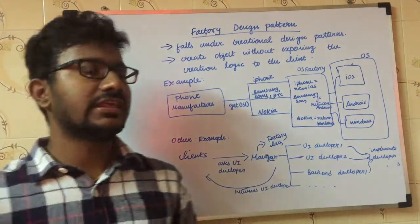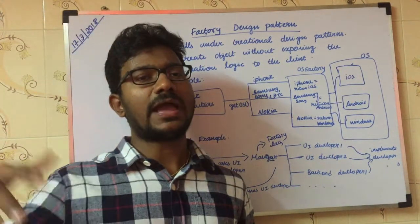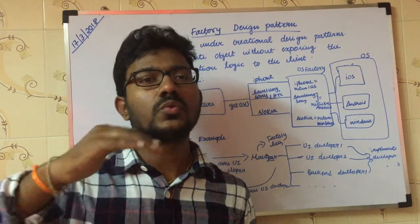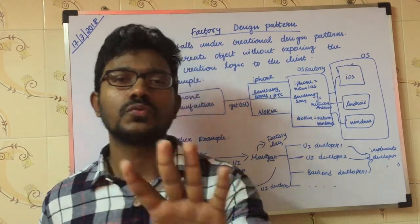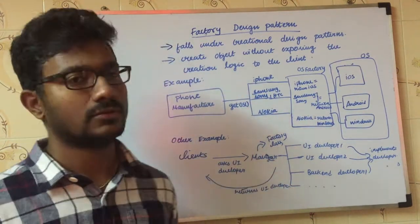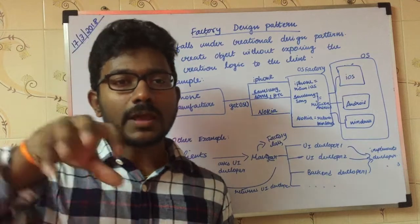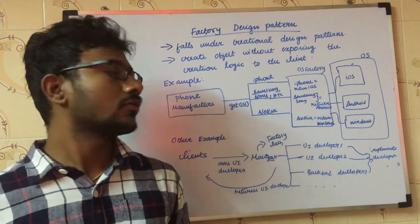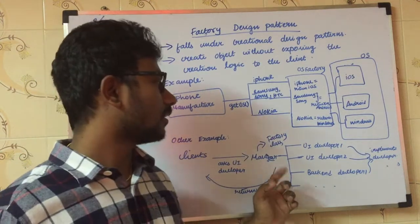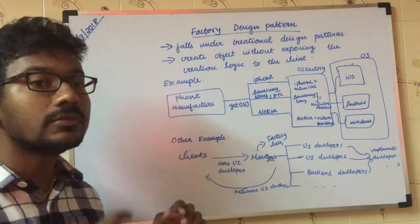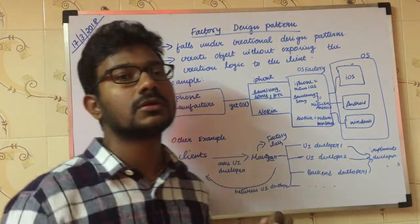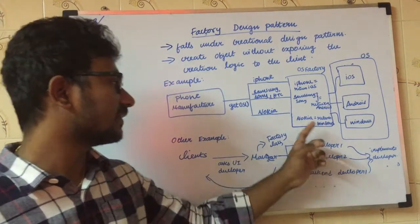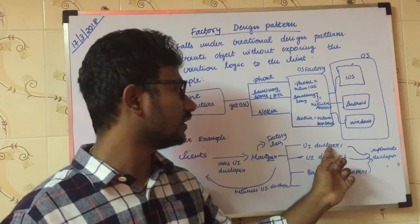So a client — a client who is from a bank — will ask for the best UI developer. They will ask the manager. The manager is the factory class. The client asks the manager: who is the best UI developer? The manager determines this on behalf of the client.